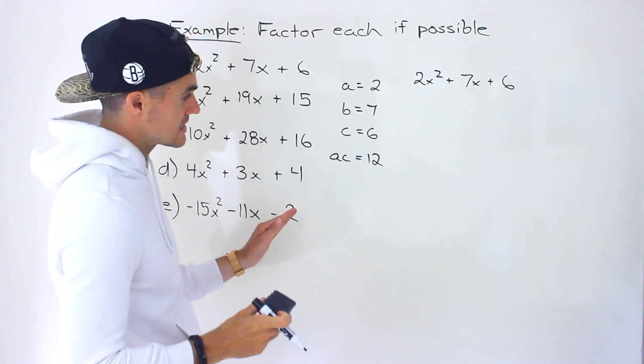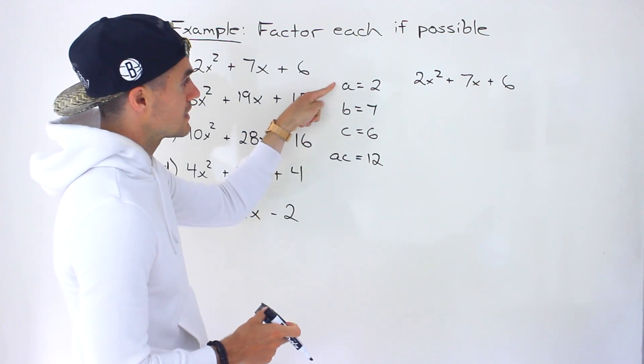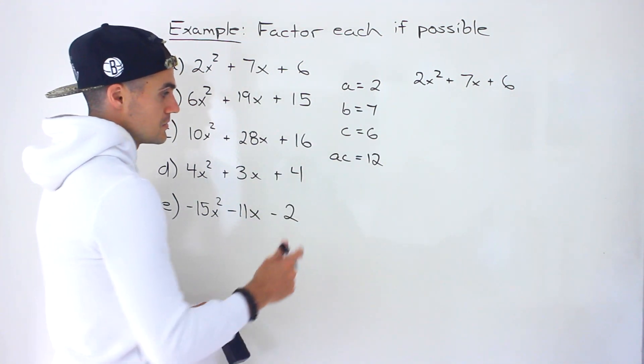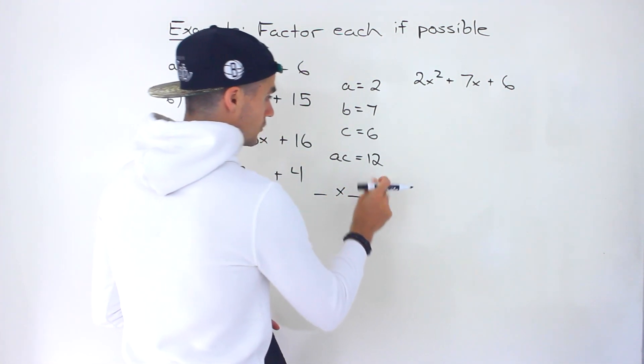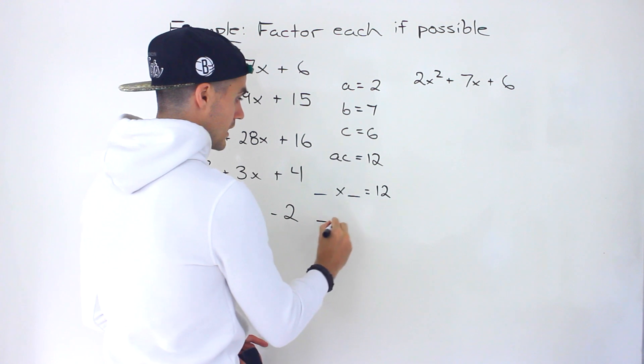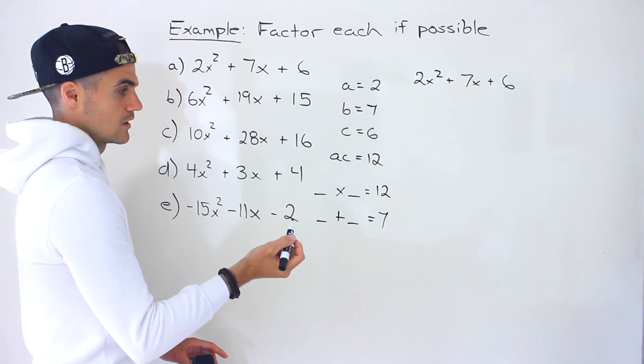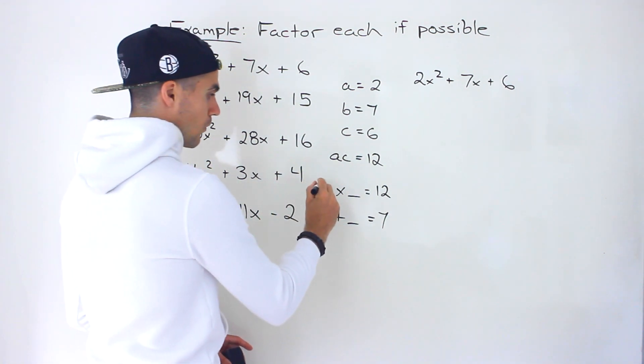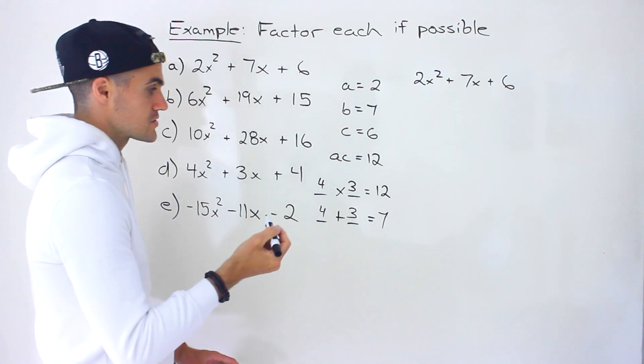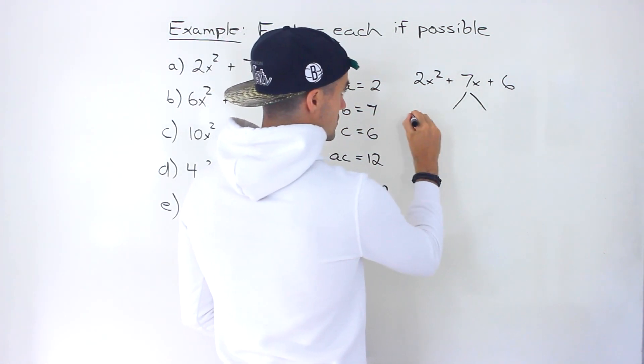Notice now with these examples, the AC value is going to be different than the C value. When we're finding two numbers that multiply, it's got to be to this AC value of 12, not to the C value of 6. Be careful with that. And we've got to find two numbers that add up to the B value of 7. What would those two numbers be? 4 and 3. 4 times 3 is positive 12, 4 plus 3 is 7. So we take these two numbers and decompose that B value.